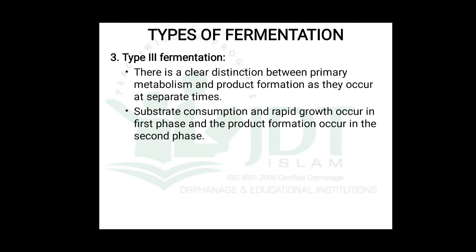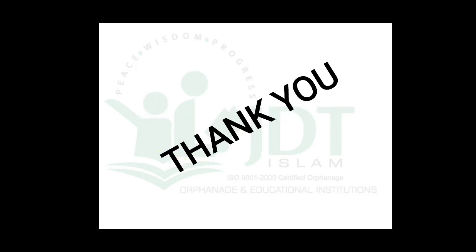In Type 3 fermentation, there is a clear distinction between primary metabolism and product formation, as they occur at separate times. Substrate consumption and rapid growth occur in the first phase, and product formation occurs in the second phase. These are all the types of fermentation processes. Thank you for watching this video.